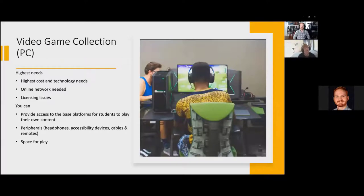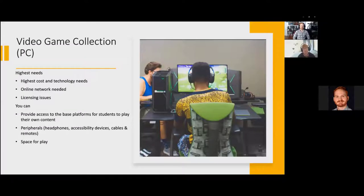A video game collection for PC is much harder right now — they have higher costs and technology needs. Most libraries already have PCs that will probably play some games, but may not play higher-end games. Overwatch may run at a crawl on a regular searching PC, but some games could play on PCs you already have. If you buy a great computer to start with, it'll last three to five years. You'll need an online account — there are not a lot of library licenses for this, but students are fine playing on their own Steam accounts. Licensing issues are something librarians collecting games will need to talk about, just like we did for video 20 years ago.